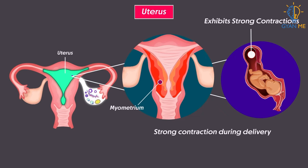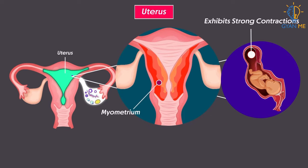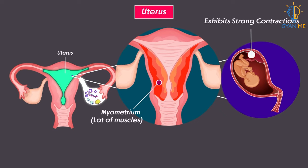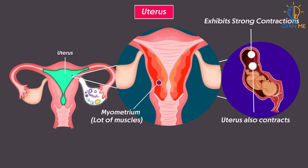Can you reason why? Simple — the myometrium exhibits strong contraction during delivery of the baby because it is made up of a lot of muscles. So when they contract, the uterus also contracts, and this helps in delivery of the baby.